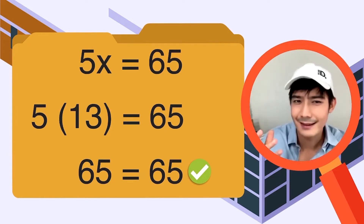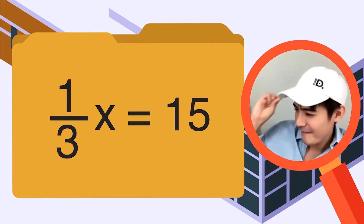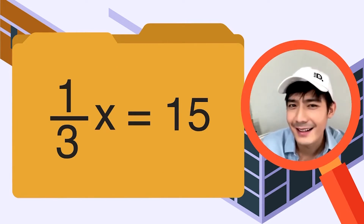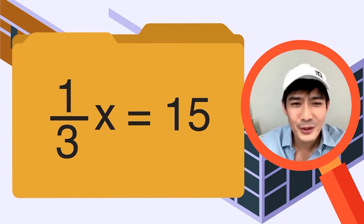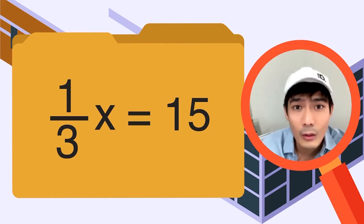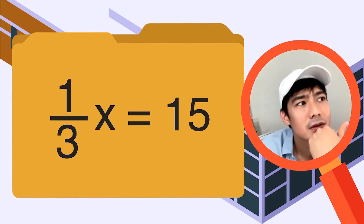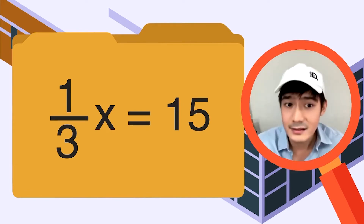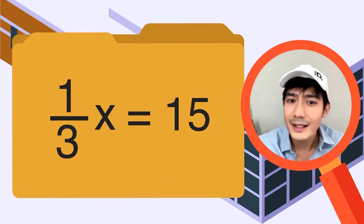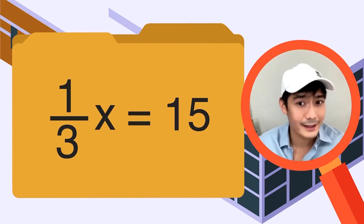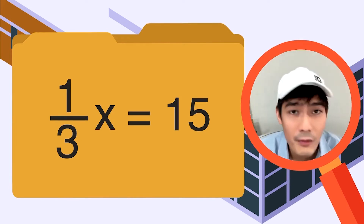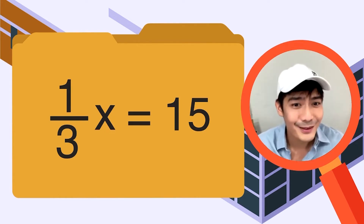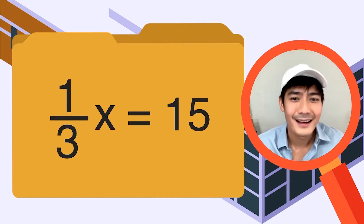Para naman kung ganito — 1/3 x is equal to 15. Anong number ang imultiply natin sa 1/3 to give us 15? Kung irobs, hindi na siya multiplication — division na siya. Anong gagawin natin? Dahil 1/3 x ang nasa equation natin, we need to isolate x by multiplying the inverse of 1/3 on both sides. Division to — anong gagawin natin? Magmultiply tayo.